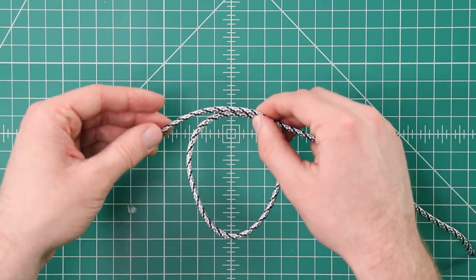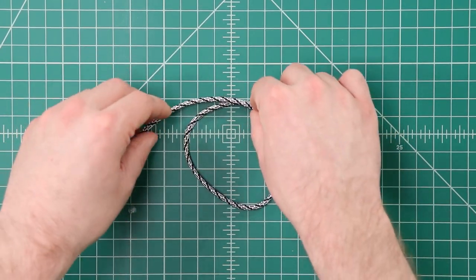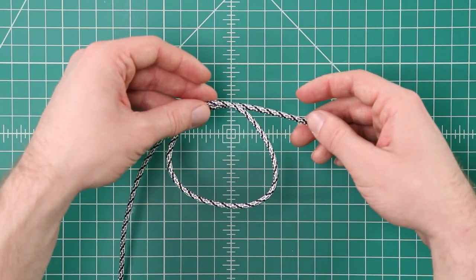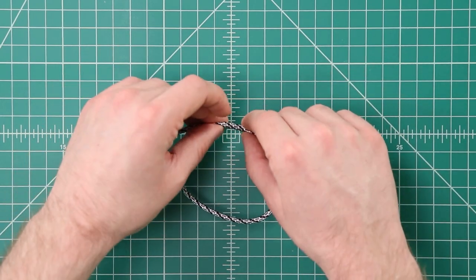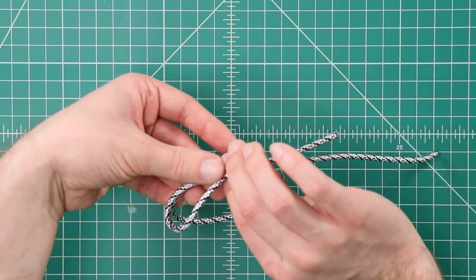So to get started we need to form a loop with the paracord. So just put one end of the paracord over the other. You're going to want to do this about in the middle of the cord and then the loop that's on top you're going to form a second loop.